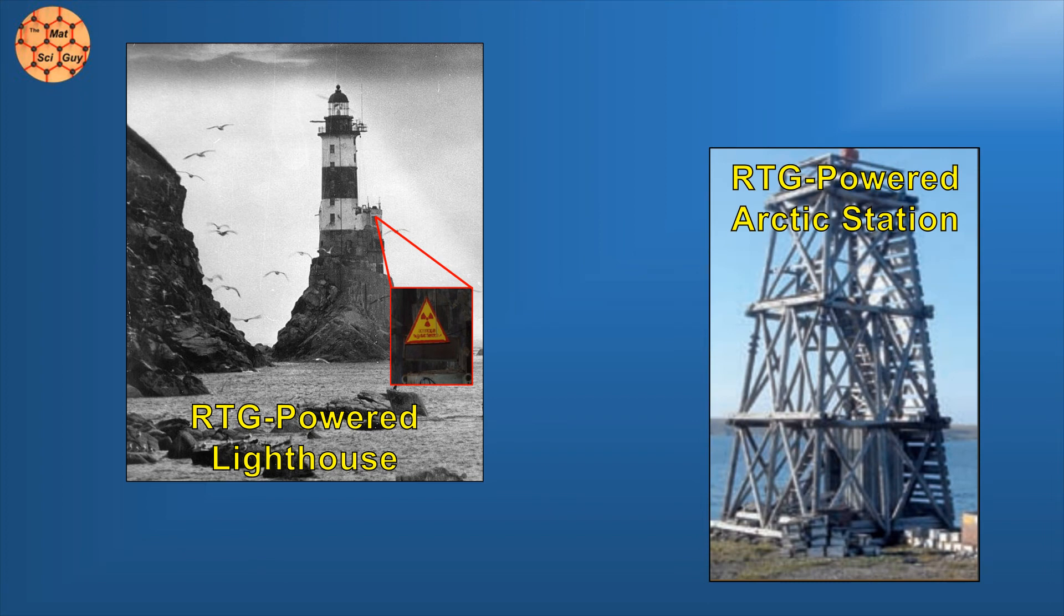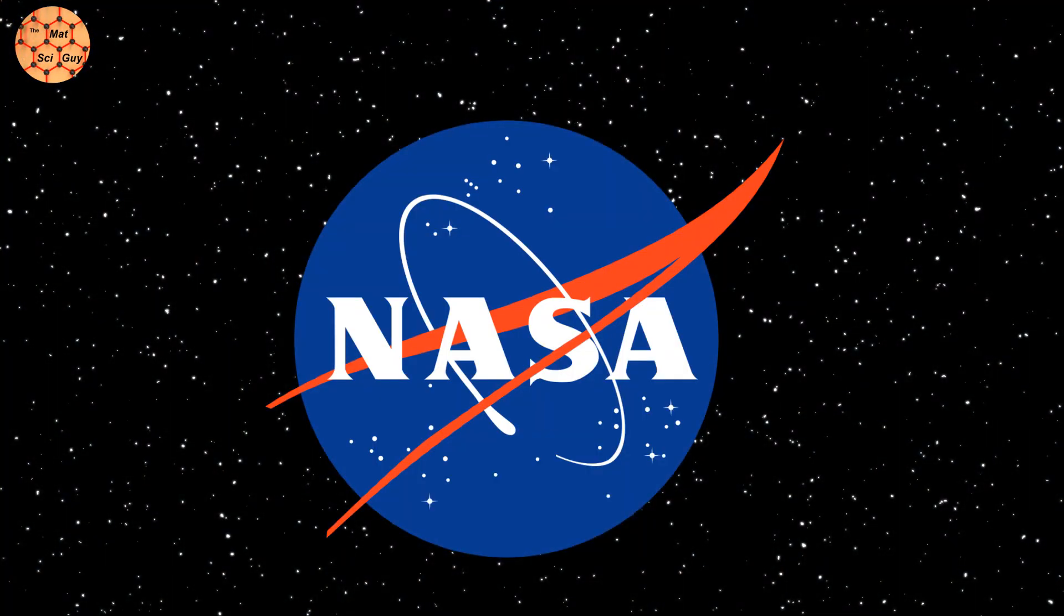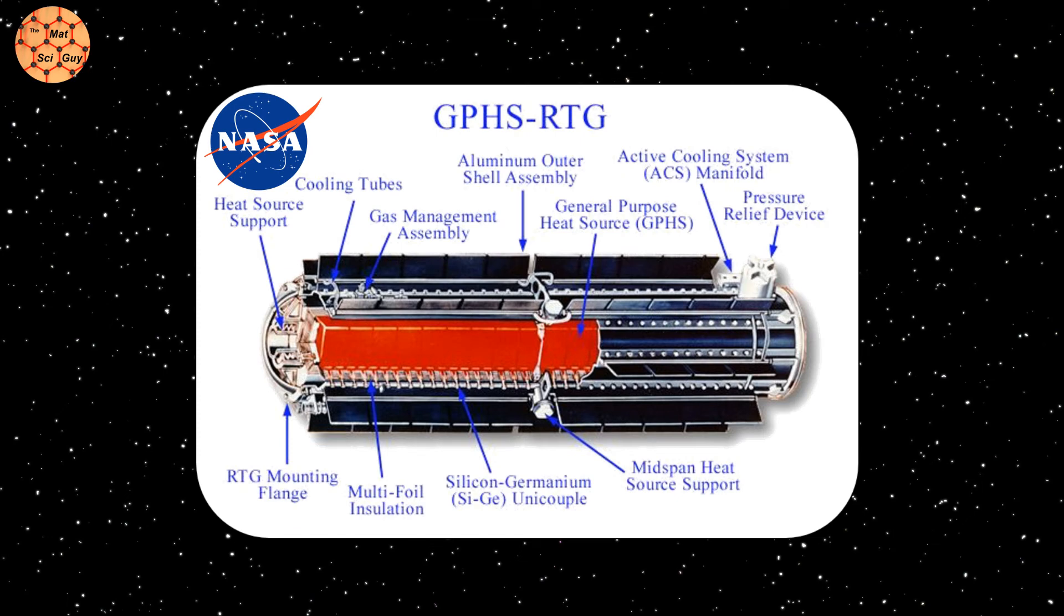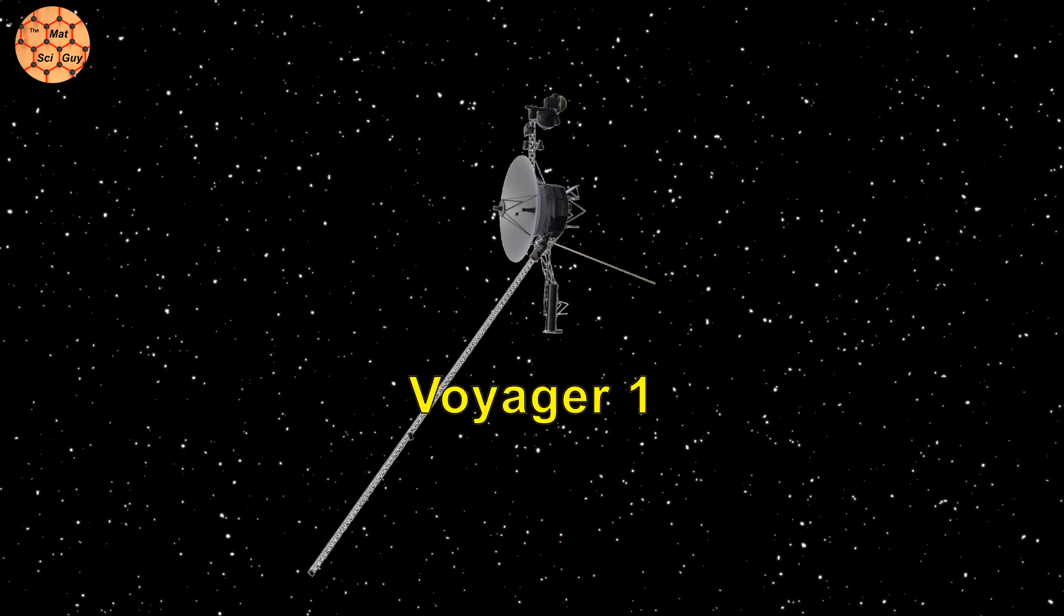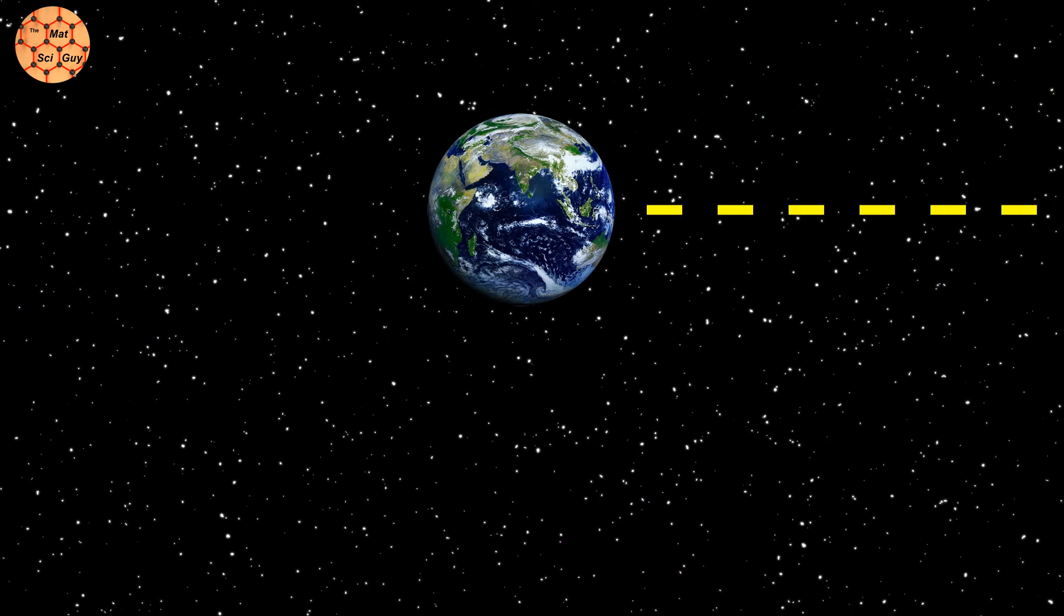But silicon germanium's unique thermoelectric properties were of interest to one particularly important customer, NASA. Silicon germanium has been a staple of their radioisotope thermoelectric generators for decades, most notably for deep space probes. This includes the Voyager 1 probe shown in the intro, launched in 1977 and currently the farthest man-made object from Earth. This probe has enriched our understanding of the cosmos and our place in it. And even now, in 2019, it continues to transmit data all the way back to our tiny blue planet, over four decades after it was first launched.